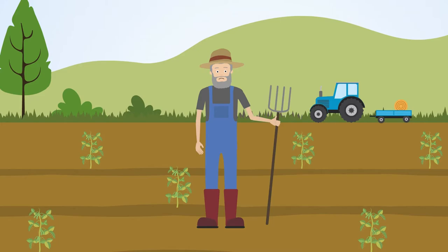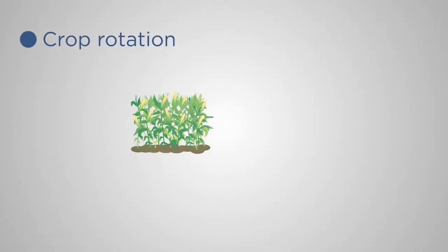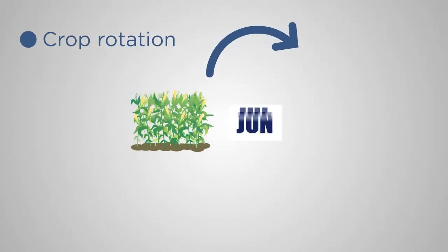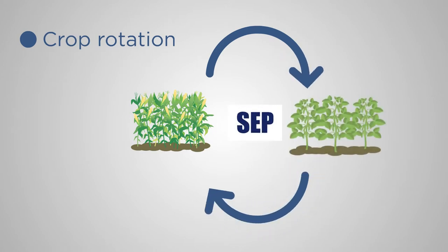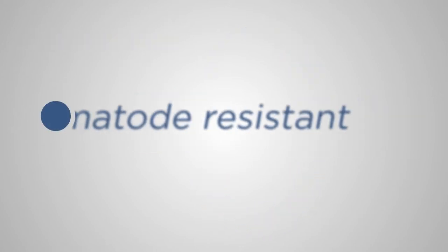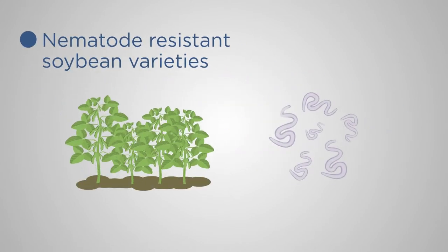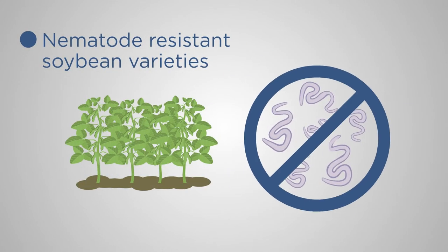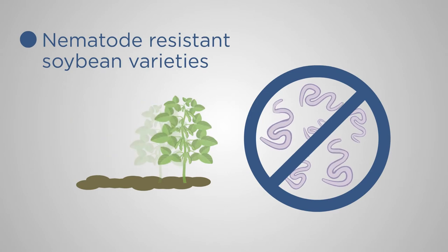Control methods are limited. These strategies include crop rotation — planting crops that are not hosts to root-knot. However, the southern root-knot nematode has a broad host range, limiting choices. Another option is nematode-resistant soybean varieties; however, the number of high-yield-producing resistant varieties is limited.